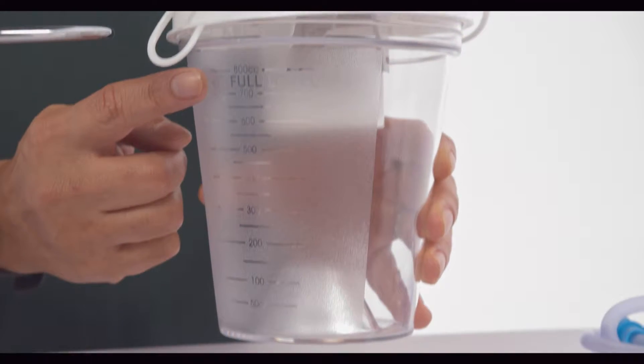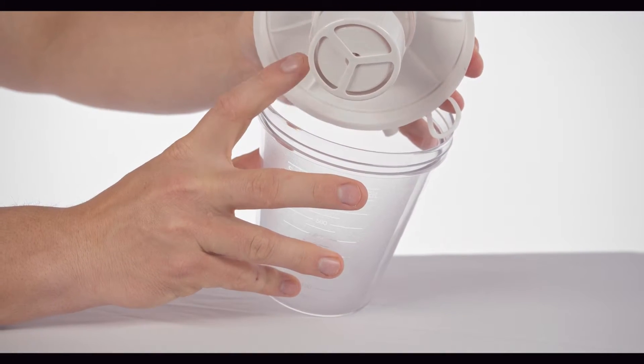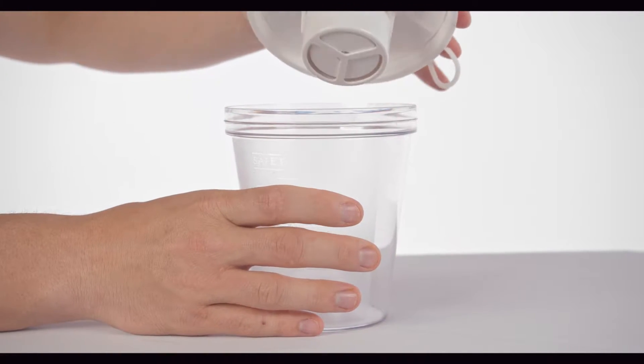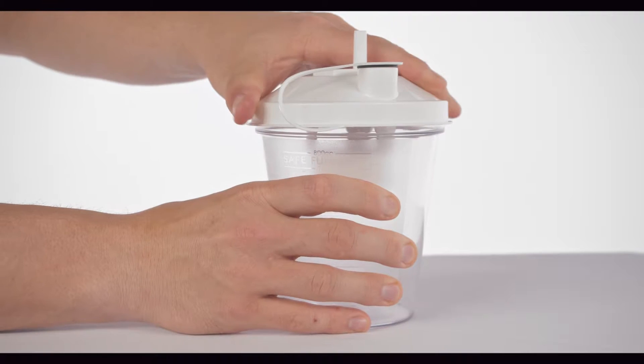The 800cc collection bottle holds all the secretions. The bottle lid, which has a float shutoff to help prevent backflow into the unit when the bottle reaches 800cc, should be tightly secured. Make sure nothing gets tucked underneath the lid.